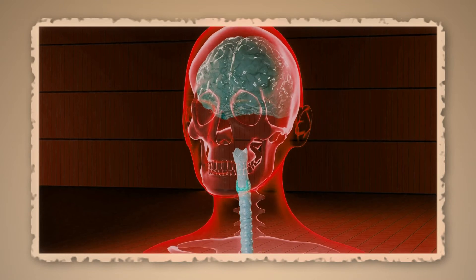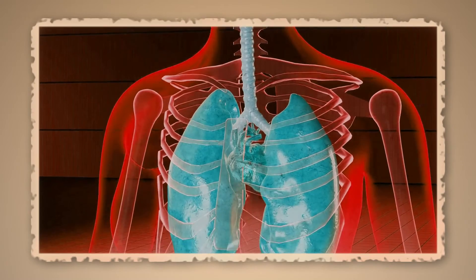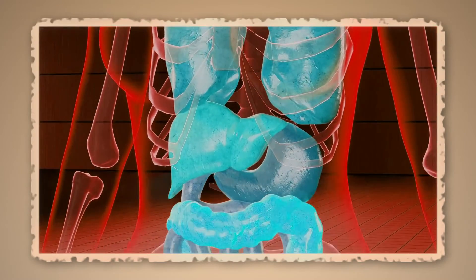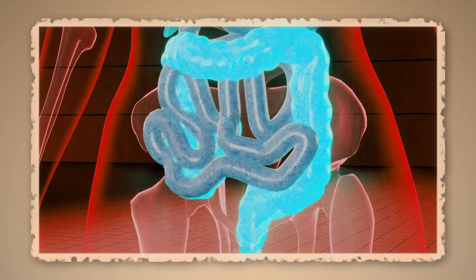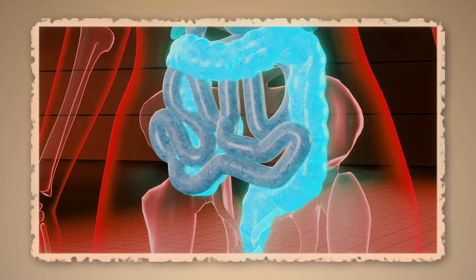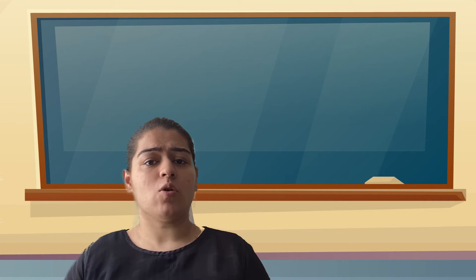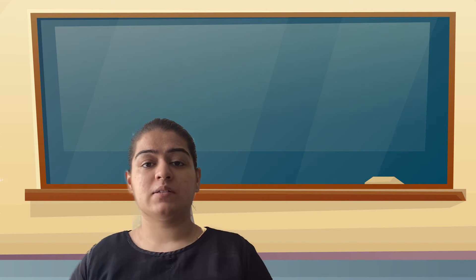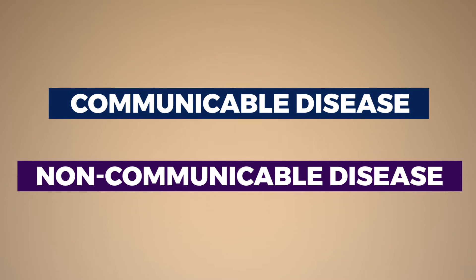Next is disease. It is a state in which a function or a part of the body is not in a healthy condition. It can occur due to poor appetite, lack of rest, or lack of cleanliness. There are two main types of diseases: communicable diseases and non-communicable diseases.